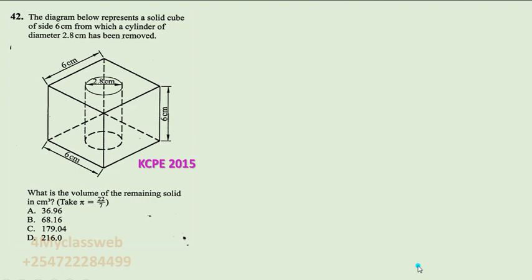This question required the candidate to remember some few concepts like what is a cube, what is a cylinder, how to work out the volume of a cube and also how to work out the volume of a cylinder. Now the question reads: the diagram below represents a solid cube of side 6 cm from which a cylinder of diameter 2.8 cm has been removed. What is the volume of the remaining solid in cm cubed?